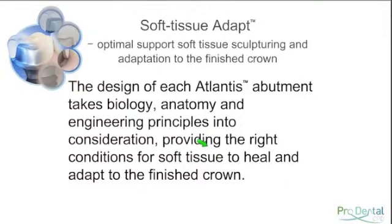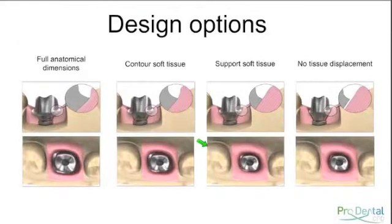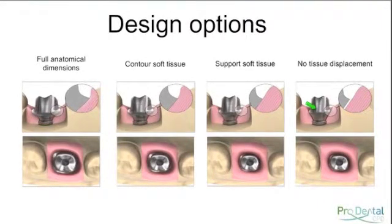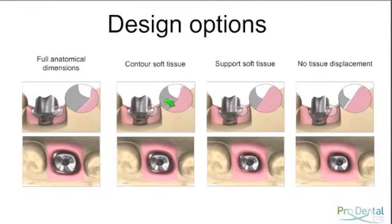One of the key characteristics of the Atlantis abutment is that we can dictate to the technician what kind of healing we want. Where we have a thin biotype, we can ask for no tissue displacement at all — no buffer pressure — to help minimise the chances of getting a recession defect. Conversely, if we're trying to generate papillae, we might ask for some pressure interproximally in the hope that those papillae may form. This is a fairly unique capability of the Atlantis abutment that we can't achieve with a stock abutment.